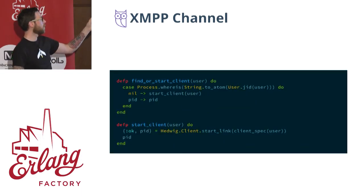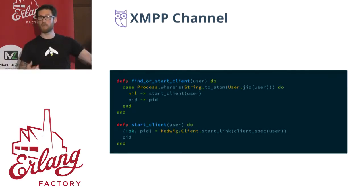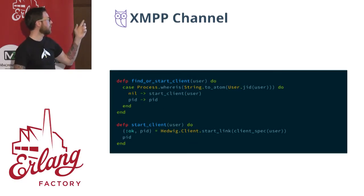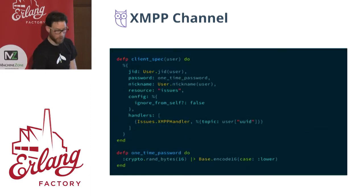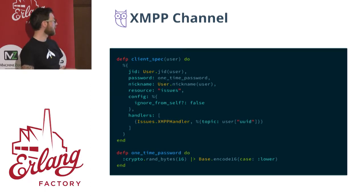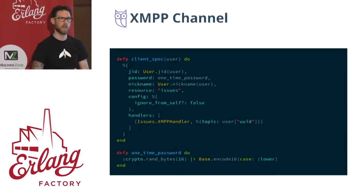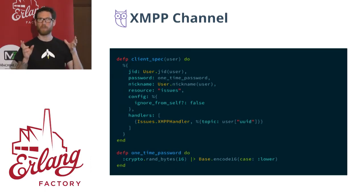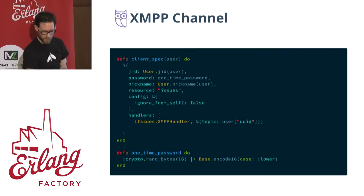find_or_start_client would try to find a current process of a Hedwig client that's already running — in case you disconnected and needed to reconnect to find the original client. We start the client which takes a client spec — basically that configuration I showed earlier — specifying your Jabber identifier, your password, and all that. In this case the password is just a one-time password, and MongooseIM has a really cool eJabberd HTTP auth where you can actually call over the wire to check on passwords for users.